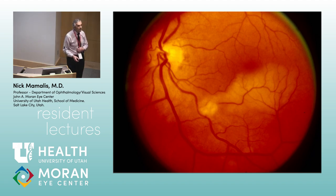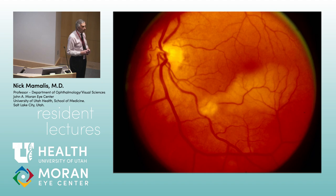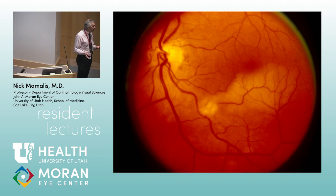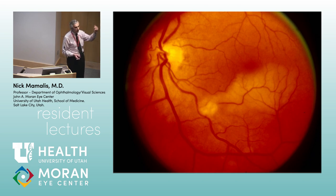Here we see a more focal area of whitening/ischemia, maybe a cotton wool spot — that means this is a branch artery occlusion rather than a central artery occlusion. One of the arterioles gets blocked off and you get a focal area of ischemia corresponding to it. Same process, usually embolic, but further downstream blocking one branch rather than the entire central retinal artery.